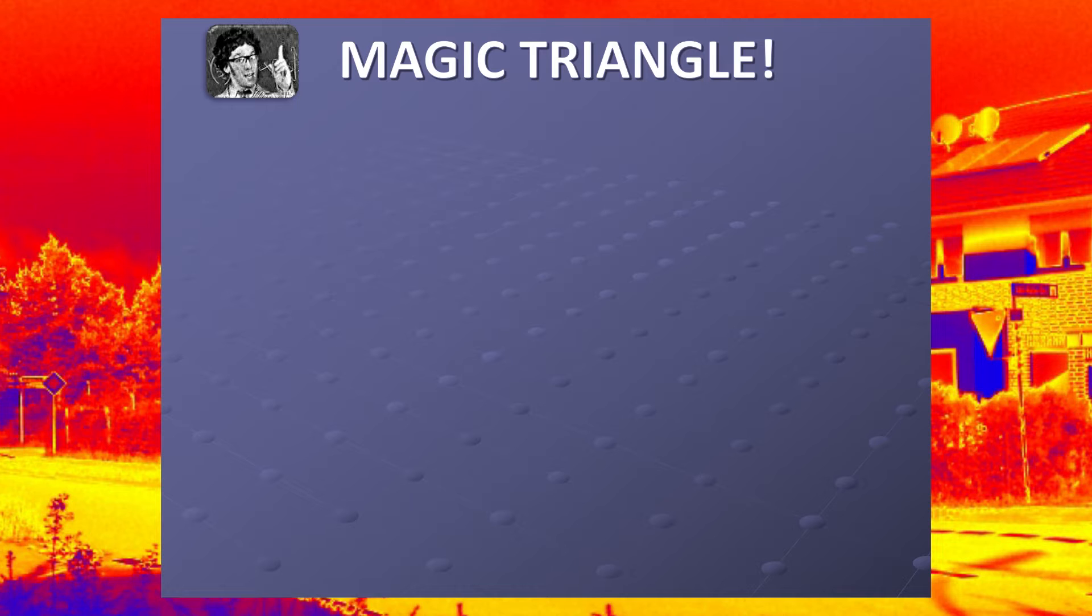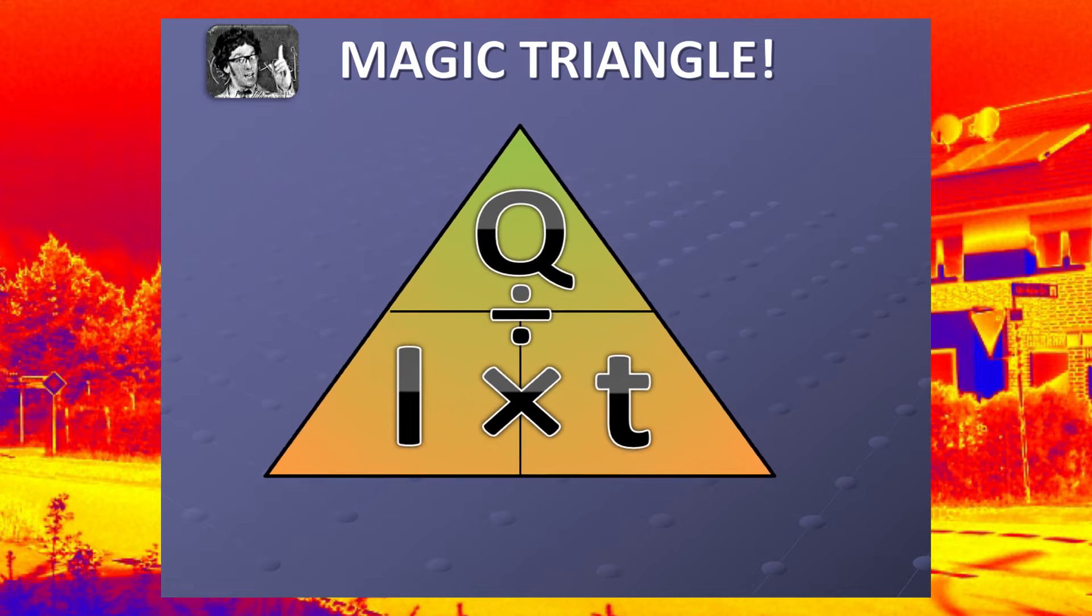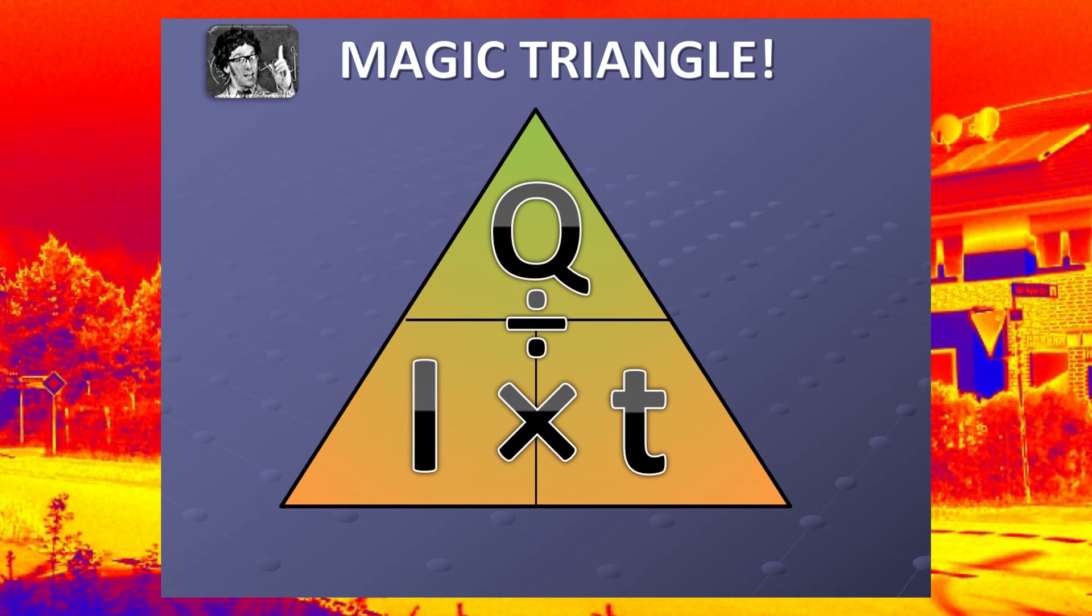So, what's the magic triangle going to look like? Well, we've got Q equals I times T. So, if the I and T are together, that's what we see on the bottom of the magic triangle. Get that in your brain. They do like to give questions featuring this equation in the exams.